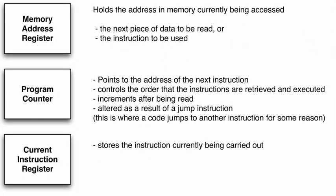The program counter points to the address of the next instruction, controls the order that instructions are retrieved and executed, and increments — adds one — after being read. It is also altered as a result of a jump instruction, where the code jumps to another instruction rather than doing the next one in sequence. For example, think of an if statement: if something happens, you do the line below; if not, it jumps to an else statement later on.